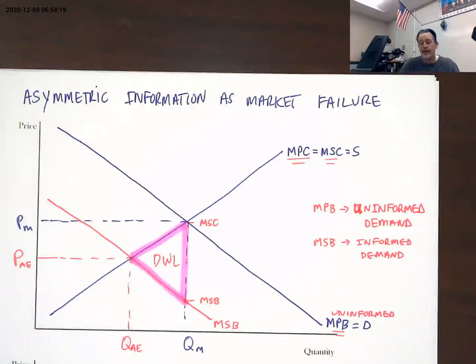So there is asymmetric information as a market failure and how it can create deadweight loss and inefficiency. Thank you.